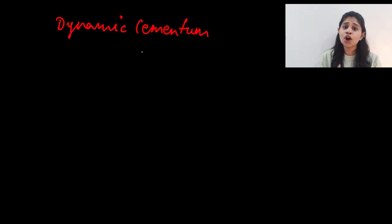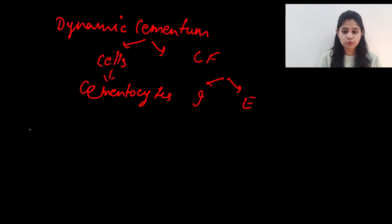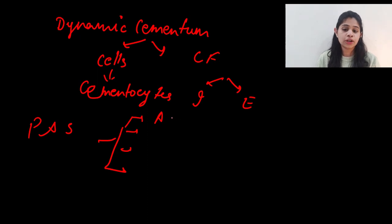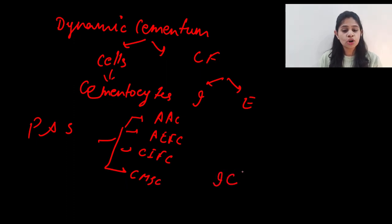To quickly recapitulate: we spoke about the dynamic nature of cementum and how it is not uniform throughout the length of the root. We spoke about cementocytes and collagen fibers — either intrinsic or extrinsic. Based on these components, Page and Schroeder classified cementum into four major classes: acellular afibrillar cementum, acellular extrinsic fiber cementum, cellular intrinsic fiber cementum, and cellular mixed stratified cementum. We also discussed the intermediate cementum or the layer of Hopewell-Smith and the granular layer of Tomes.